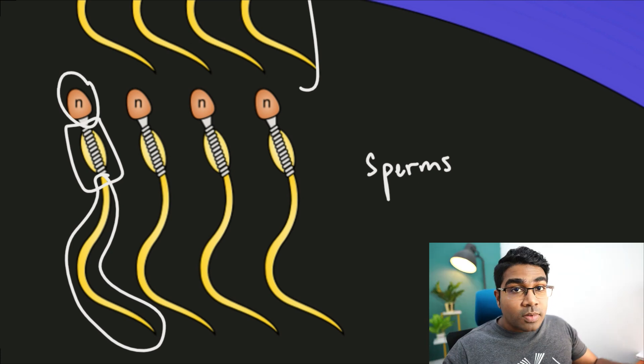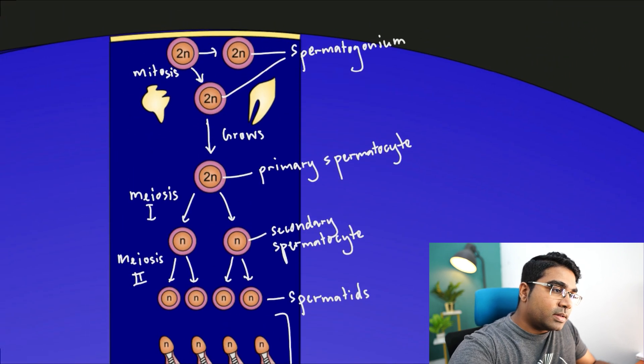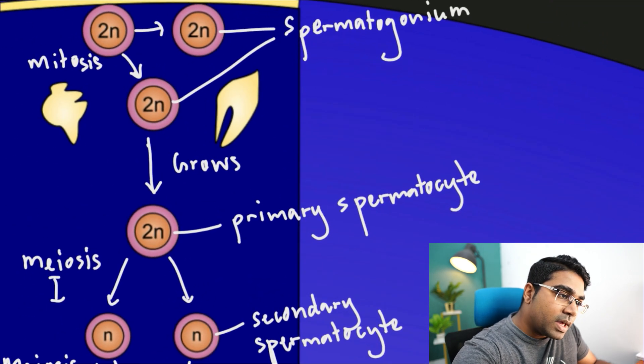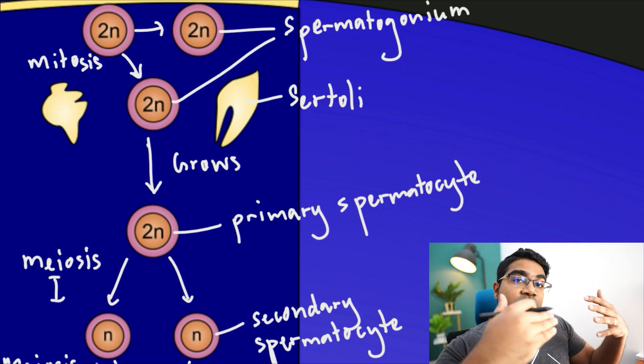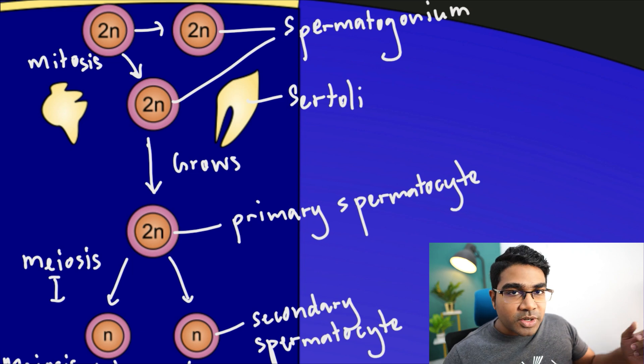There's another cell involved in this process that you can see at the side here. This is called the Sertoli cell. The Sertoli cell provides nutrients during spermatogenesis.